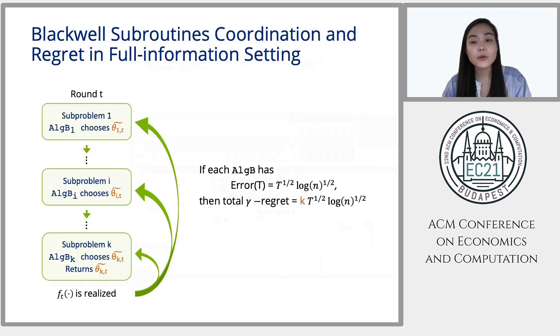Now, the remaining question is that how do these Blackwell subroutines communicate with each other? It is actually based on the original greedy algorithm. So for each round, after the algorithm runs k ALC of b's, then it gets the final set, it submits it, and it gets back the f of t function. It returns the f of t function to each of the ALC of b subroutines. Now, our analysis shows that if each ALC of b accumulates error that is upper bounded by square root of t log n, then the total gamma regret will be upper bounded by k times square root of t log n.